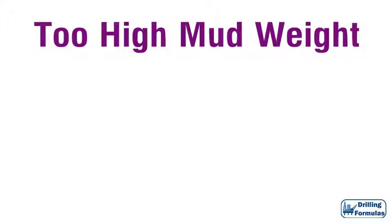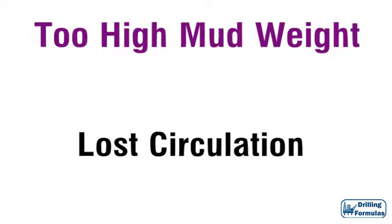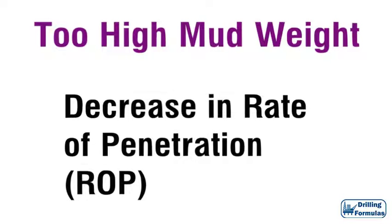What will happen if the mud weight is too high? Lost circulation — if the hydrostatic pressure from the mud column exceeds formation strength, it will cause the formation to break. Once the formation is broken, drilling fluids will be lost into the induced formation fractures. Additionally, there will be a decrease in rate of penetration, because heavier mud weight decreases ROP due to the chip hold-down effect.